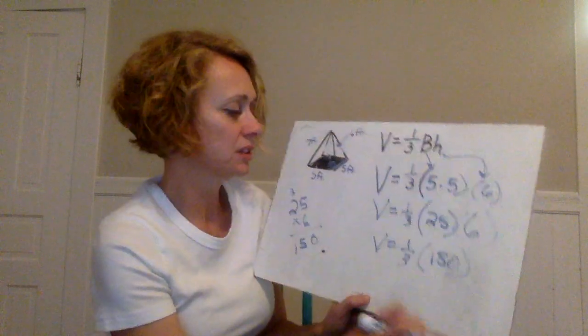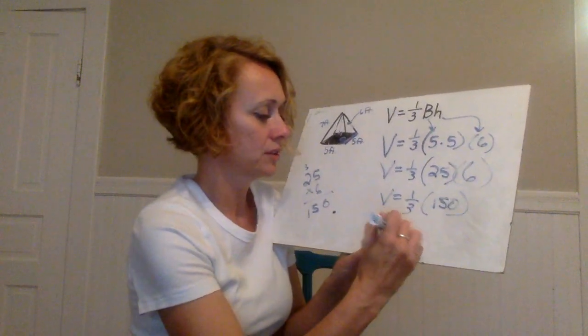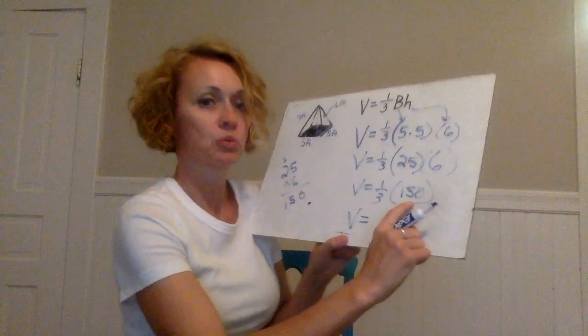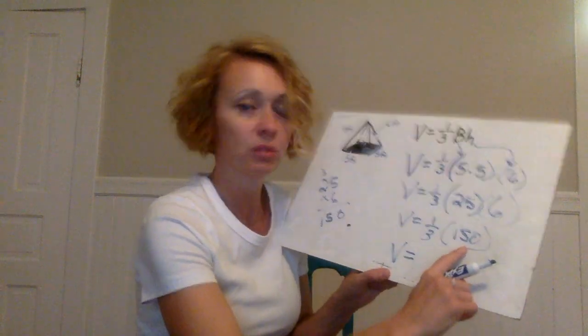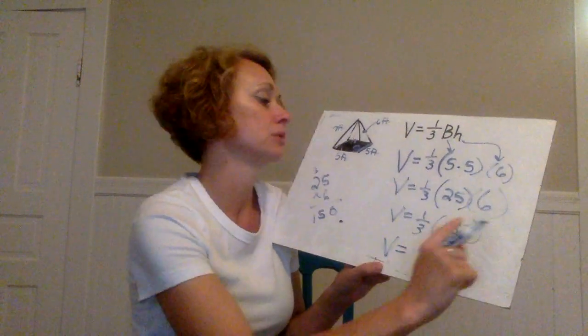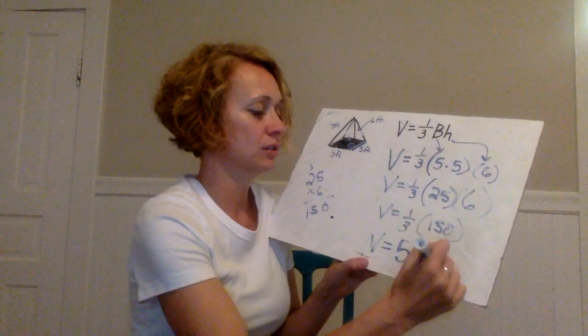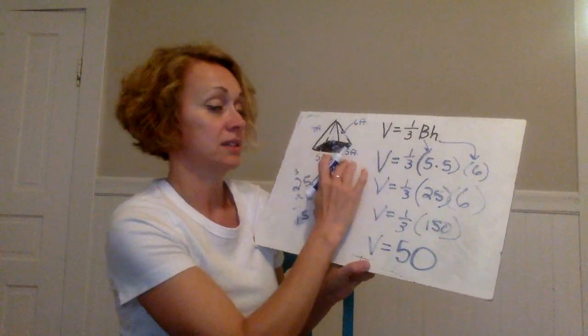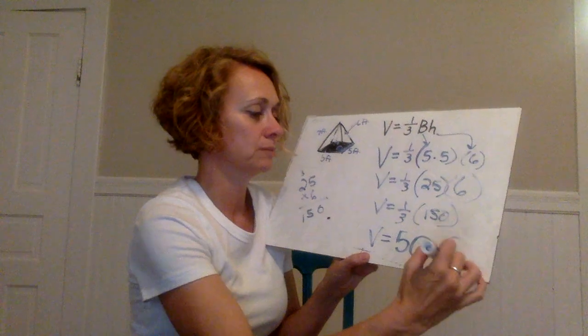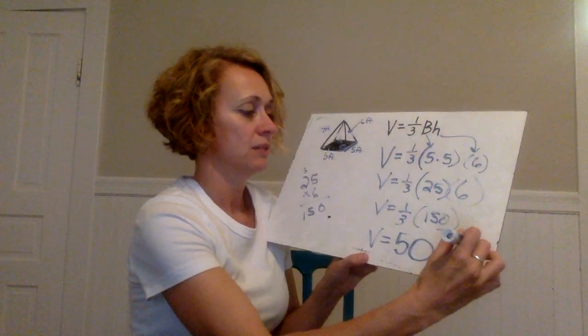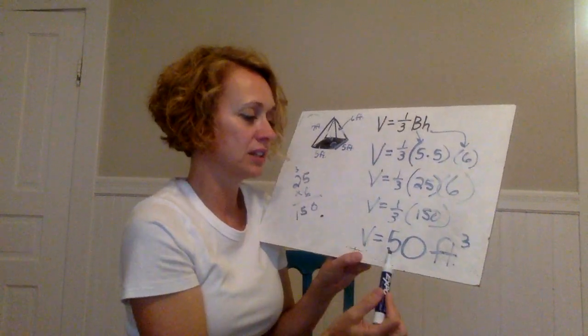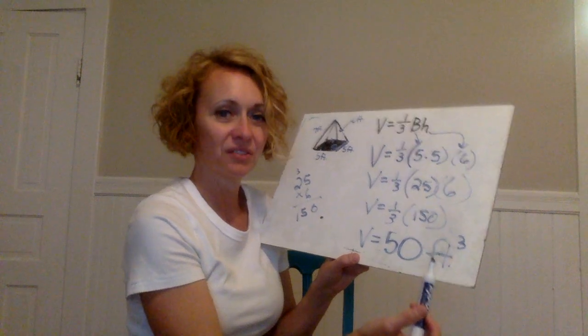So to finish this up I would do volume is equal to one-third times 150 which you know when you multiply by a unit fraction you're really just dividing by three. So this answer would be 50 and since it's volume it's three-dimensional it would give me feet to the third power and I'm going to read that as 50 cubic feet.